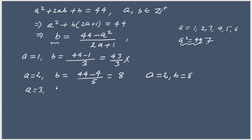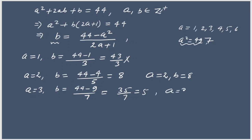If a = 3: b = (44 − 9) / (2×3 + 1) = 35/7 = 5. So we get the solution a = 3 and b = 5, which is also an acceptable solution since both are integers.